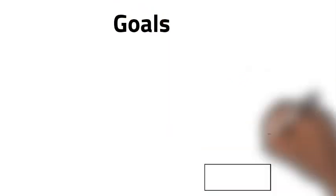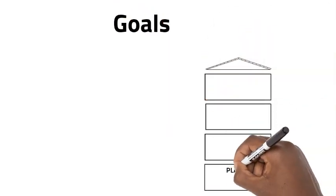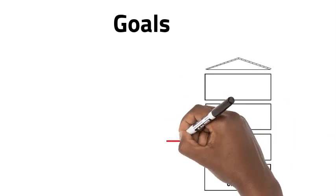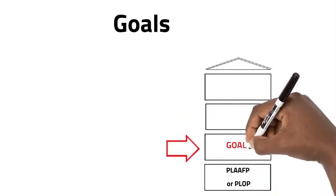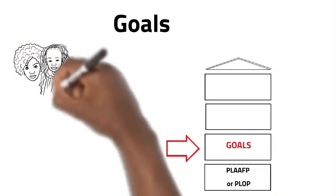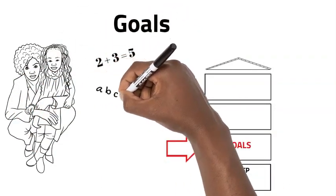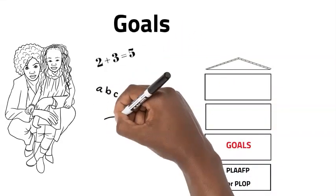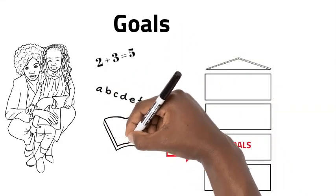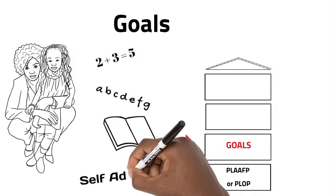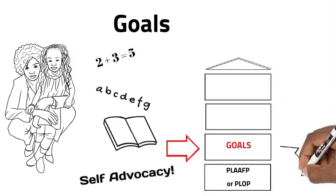Goals. The IEP will also include a set of goals based on the present levels, and this should be created with input from you and ideally your child. What do they need to work on? What do they hope to accomplish? What are their top priorities? The goals will also include objectives that help the school and the team measure the progress towards those goals.